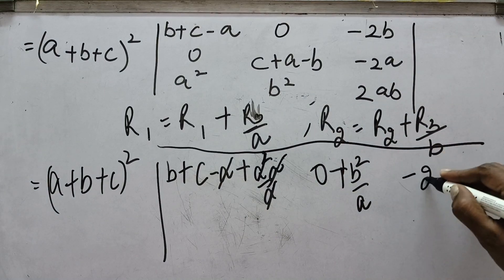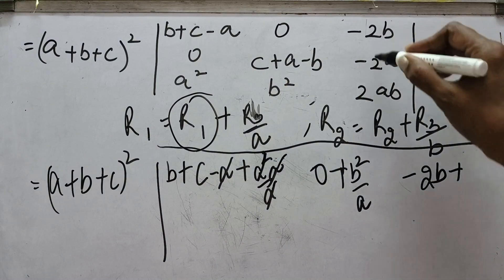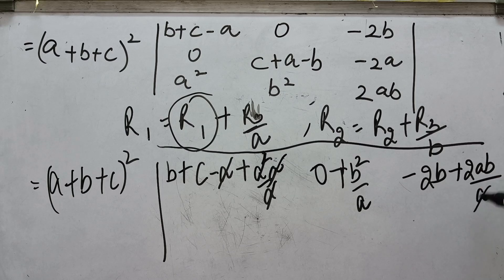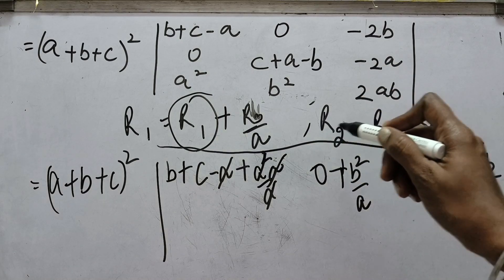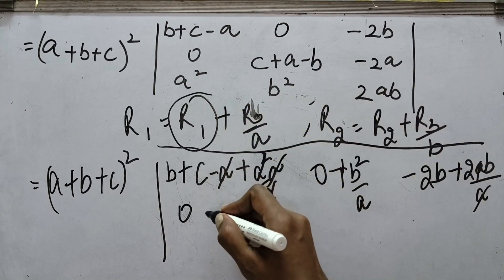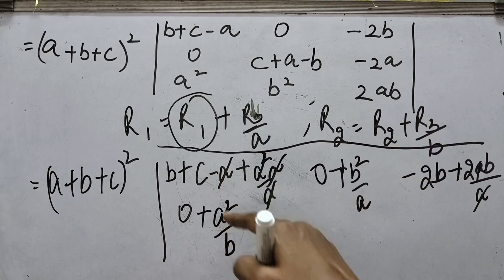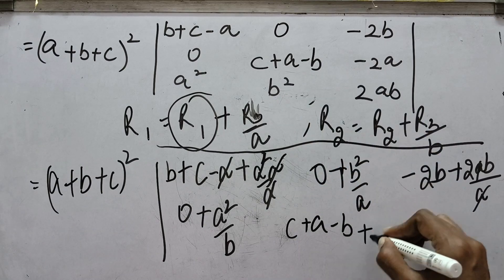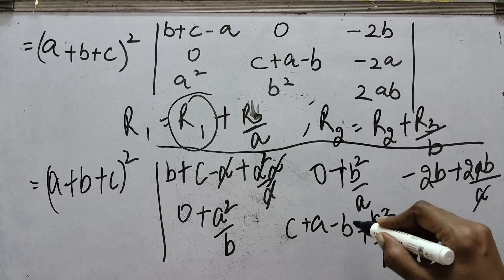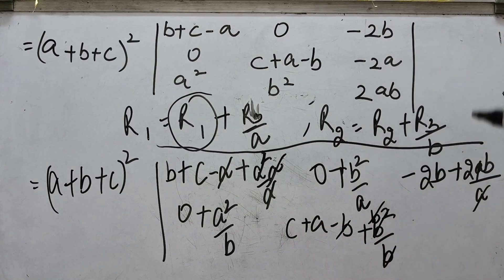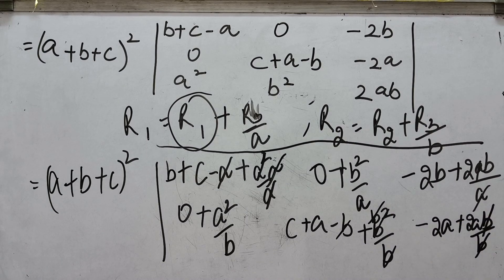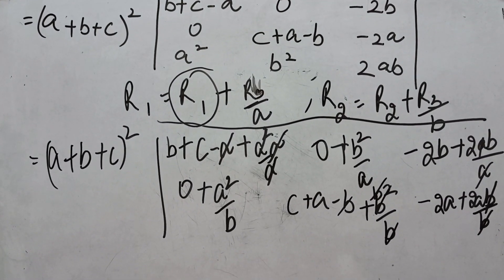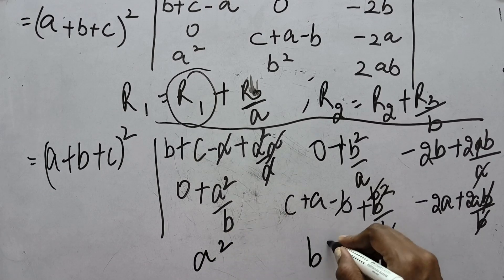Applying R1 → R1 + R3/a: first element (b+c−a) + a²/a = (b+c−a)+a = b+c; second element 0 + b²/a = b²/a; third element −2b + 2ab/a = −2b+2b = 0. Applying R2 → R2 + R3/b: first element 0 + a²/b = a²/b; second element (c+a−b) + b²/b = c+a−b+b = c+a; third element −2a + 2ab/b = −2a+2a = 0. Row 3 remains a², b², 2ab.